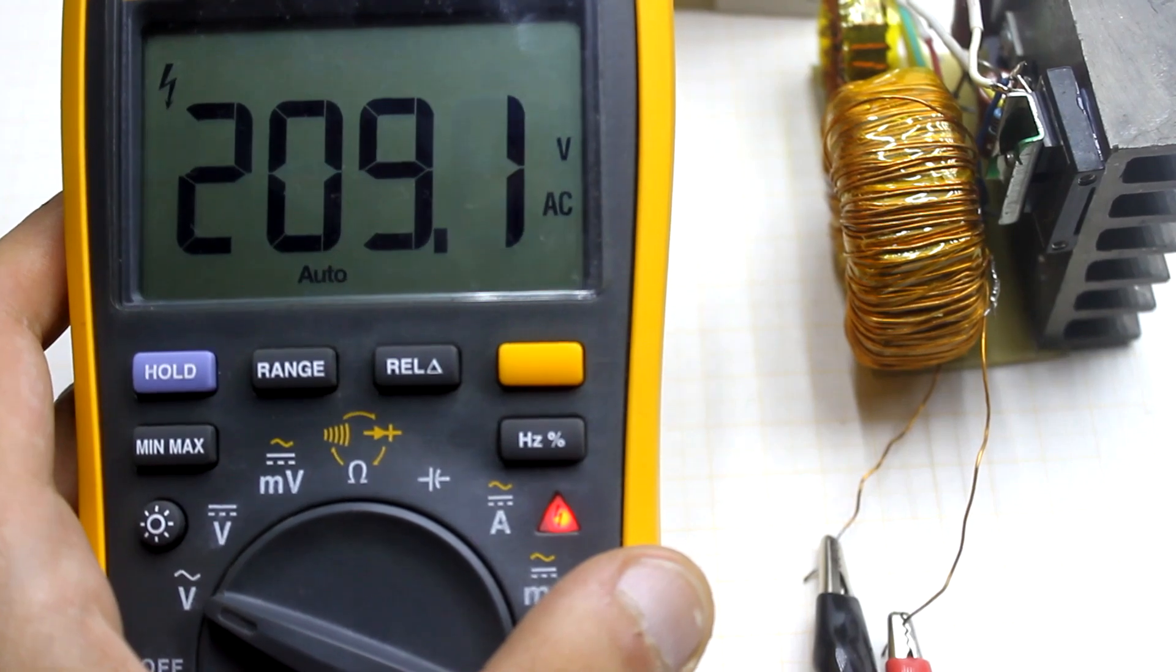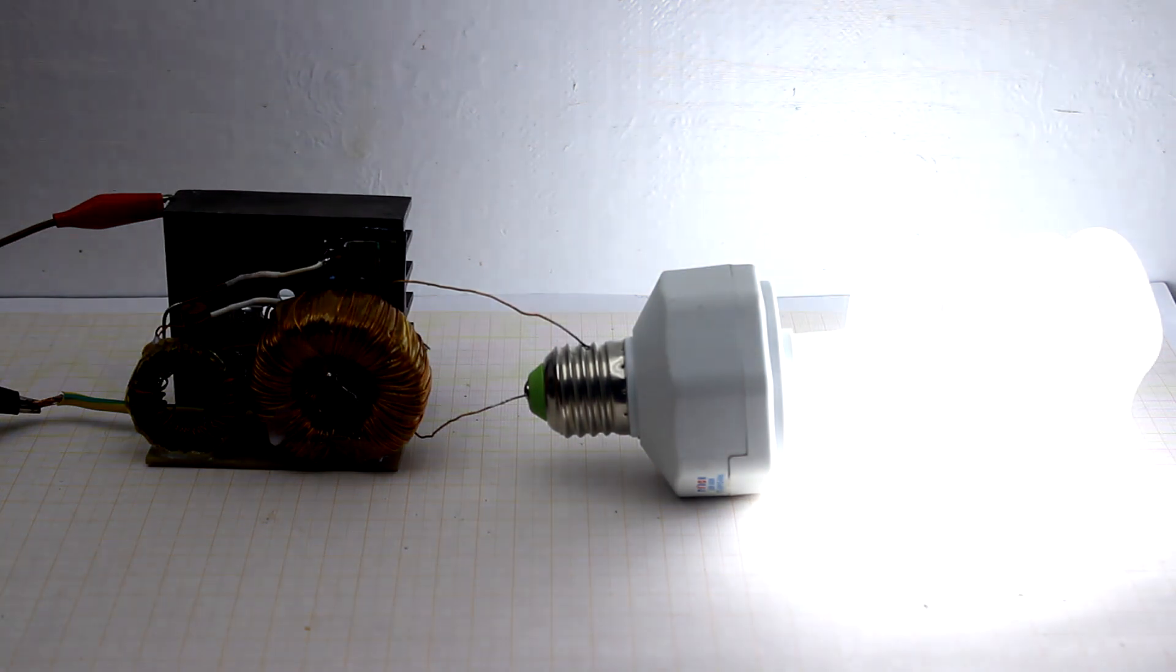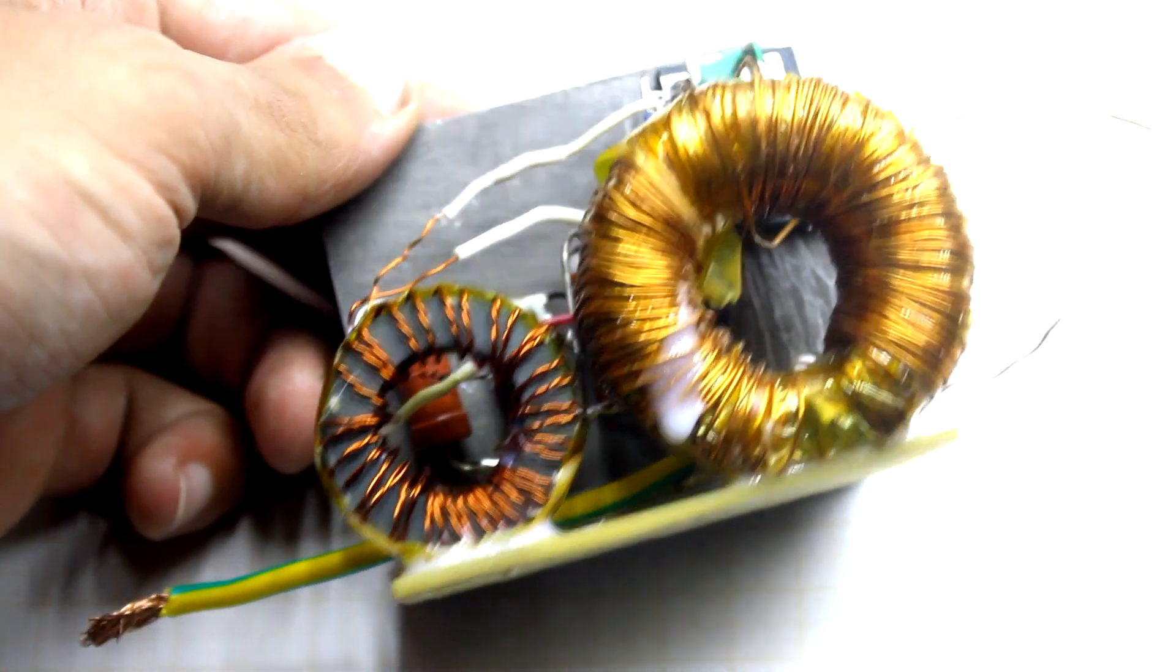Among disadvantages is the lack of voltage stabilization, and the output voltage will fluctuate in one direction or another depending on the load and the supply voltage. There is no normal protection against short circuits and low input voltage.